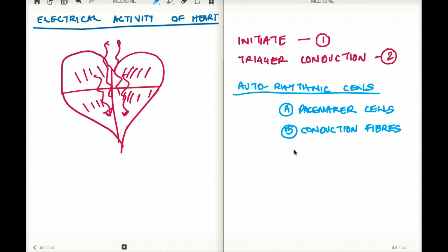Now the pacemaker cells are highly concentrated in two regions of the heart, the SA and the AV node. We know that. Now what about the conduction fibers? The conduction fibers rapidly conduct the depolarization that is generated in the pacemaker cells.